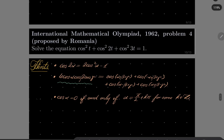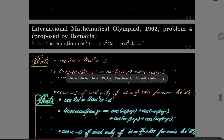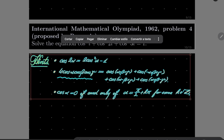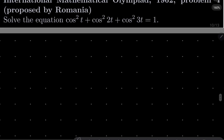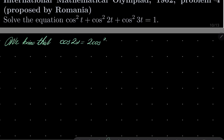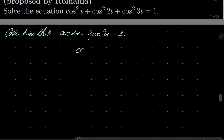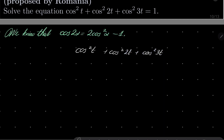So give this problem a try and I will see you in just a minute. Alright, let's start with the following identity. We know that cosine of 2 times alpha is 2 times cosine squared of alpha minus 1. I will try to eliminate squares from my equation by using this identity. Let's take our equation, and I will multiply everything by 2.